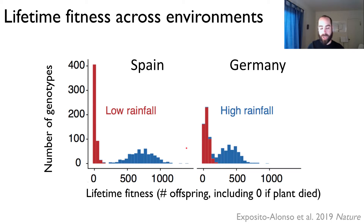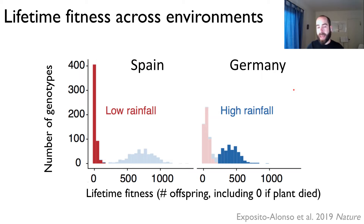You can see the distributions of fitness in these different environmental combinations. The most natural environments are, of course, Spain and low precipitation. Many fitness values are close to zero in Germany and high rainfall, and these are the two environments I'm going to be discussing mostly today.